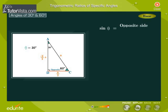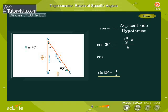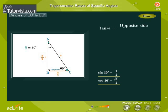Sine theta is equal to opposite side by hypotenuse. Therefore, sine of 30 degrees is equal to (a/2) divided by a, that is equal to 1/2. Cos theta is equal to adjacent side by the hypotenuse. Therefore, cos of 30 degrees is equal to (√3/2 × a) divided by a, that is equal to √3/2. Tan theta is equal to opposite side by adjacent side. Therefore, tan of 30 degrees is equal to (a/2) divided by (√3/2 × a), that is equal to 1/√3.